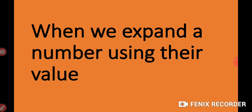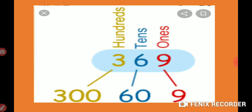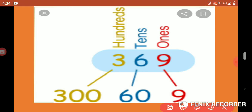Now let's start another topic: expanded form. What is expanded form? When we expand a number using their values. Let's take an example. If we take the number 369: 9 is in 1's place, 6 is in 10's place, and 3 is in 100's place.